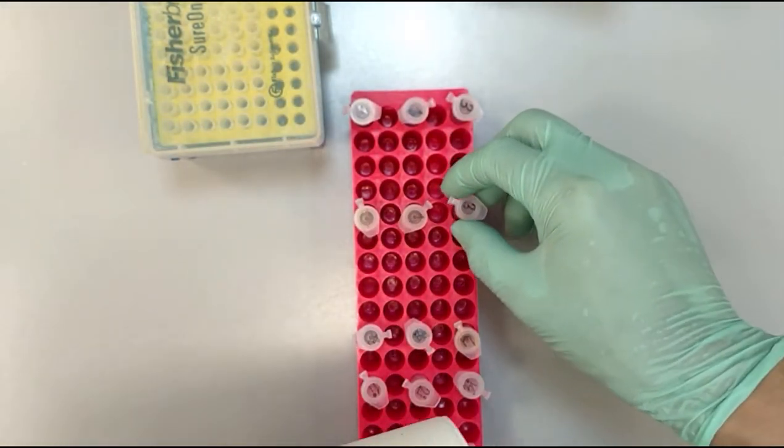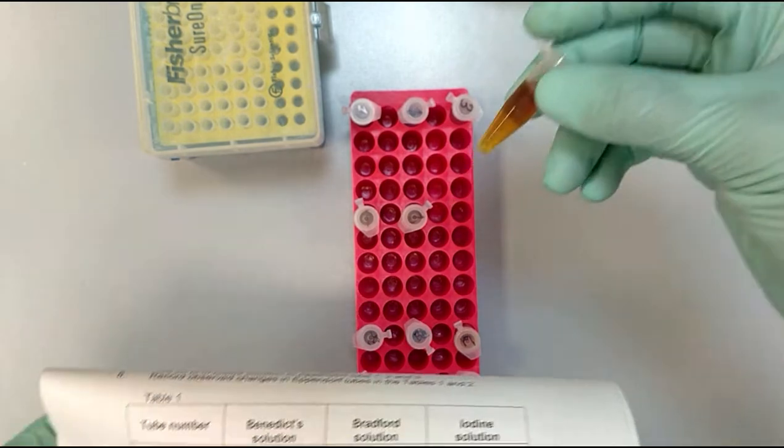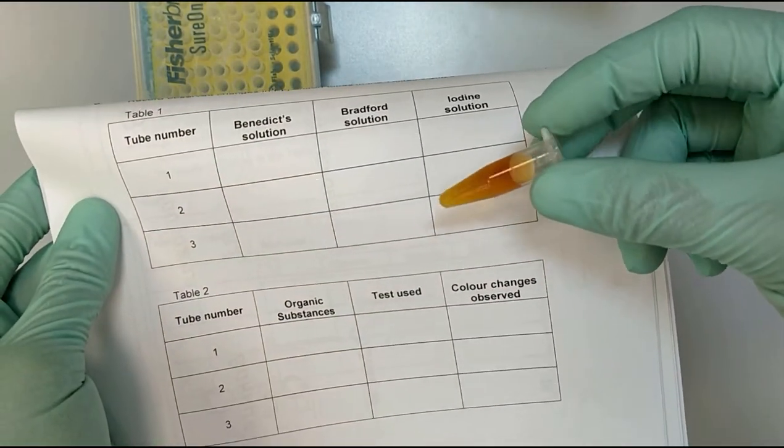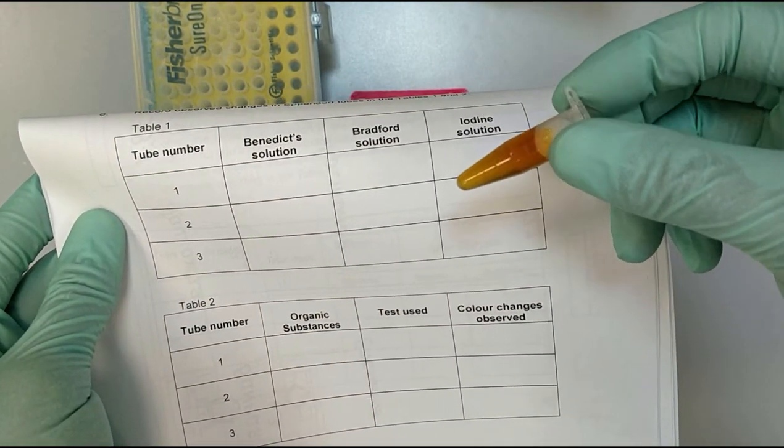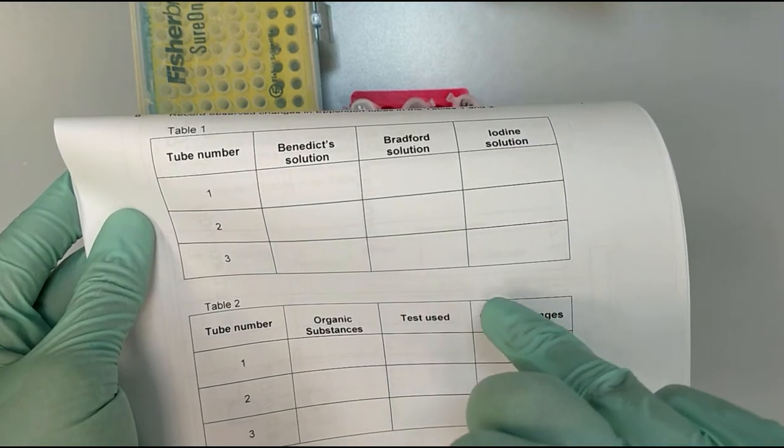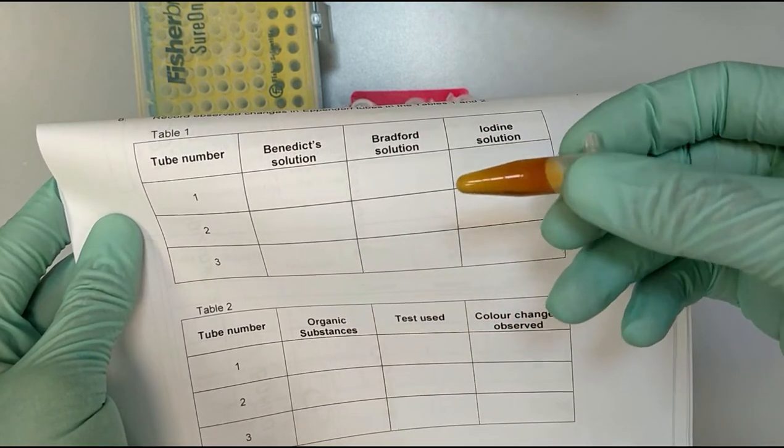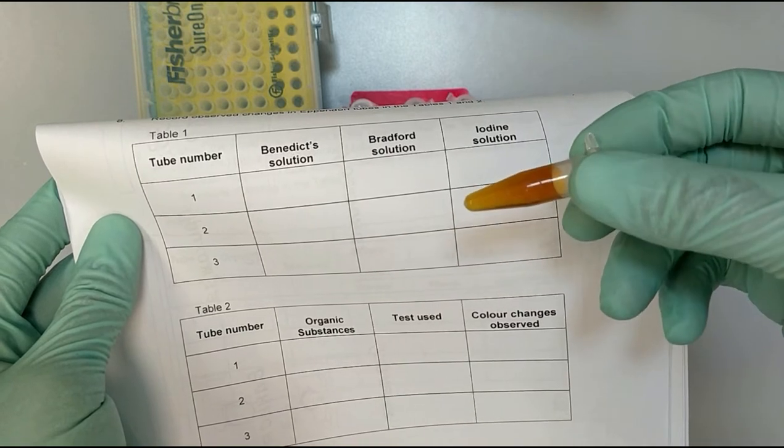So for example here we have the addition of iodine to the third tube, and you are going to write down light brownish, for example, or whichever you can see here.